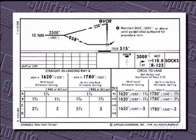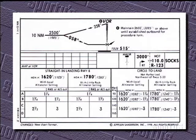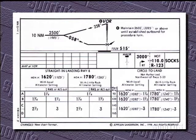Because a non-precision approach doesn't provide vertical guidance, the requirement on the pilot blips up a bit. The pilot has to follow the procedure on the chart up to the point where the runway is in sight. From that point on, a non-precision approach is scud running.